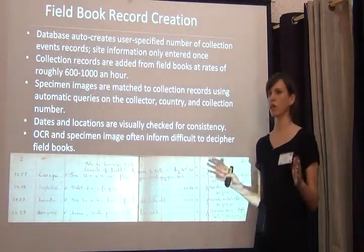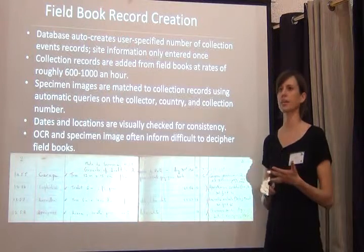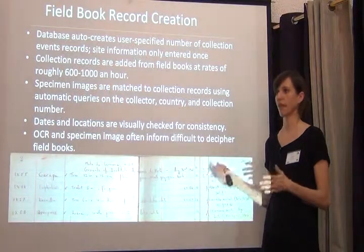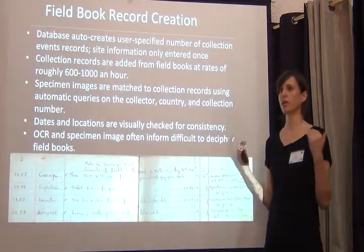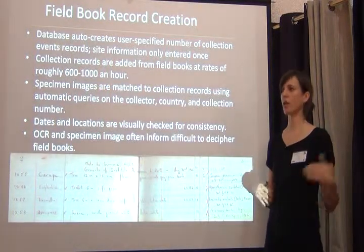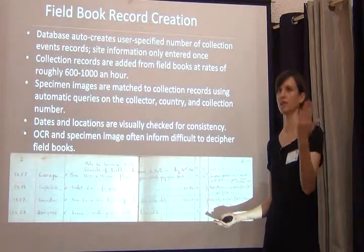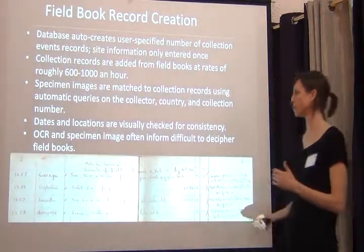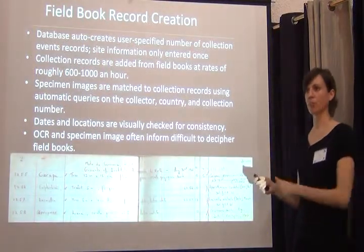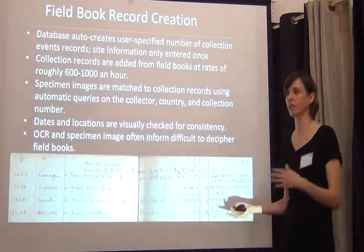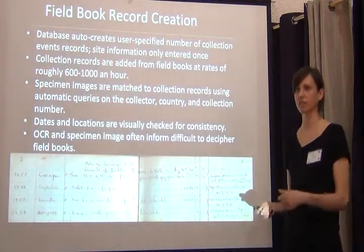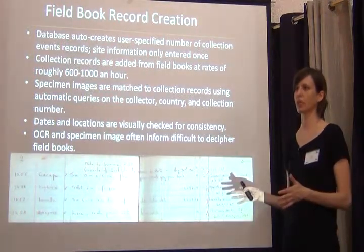We were just populating collection events: collector, collector number, date, the collection team, and every single piece of information about the site — entered only once. We had a database that can mass-generate 20 records at once based on the number range you're working with. Going page by page, we were doing about 600 to 1,000 records an hour depending on how good they were. We got tens of thousands of collection event records entered into the database before we even looked at a specimen.